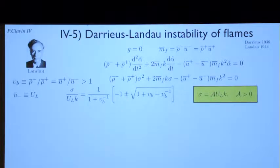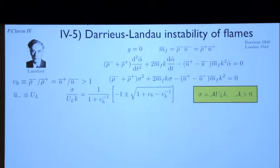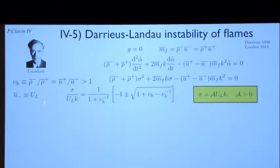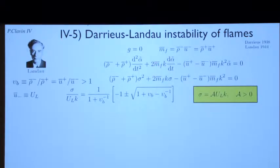Where V_B here is — it's a ratio of the density — it is a number larger than unity. So you obtain this number. A lot of work for a few things. It is interesting to look at different limits. For example, if there is a very large density ratio, this equation simplifies considerably — it's much easier to keep in mind — giving sigma as square root of U_B U_L times k.